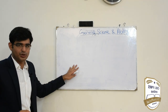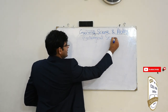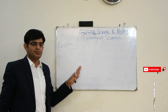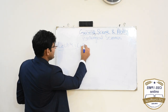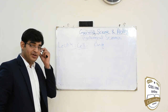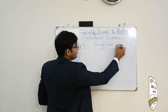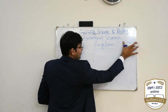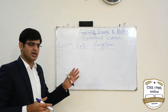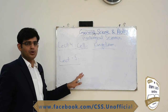اس کے بعد general science کا second portion ہے biological sciences۔ Lecture 4 میں biological sciences کے basics پڑھیں گے — cell، kingdom، living things کی division، animal kingdom، plant kingdom، اور species کی division کیسے ہوتی ہے۔ Lecture 5 exclusively human physiology پہ ہوگا جس میں مختلف organs جیسے liver، brain، pancreas اور ان کی working پڑھیں گے۔